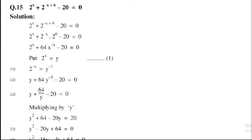Take y power minus 1 in denominator form, so power will be positive 1. So, y plus 64 divide y minus 20 is equal to 0. Multiplying y on both sides, y square plus 64 minus 20 y is equal to 0. So, y square minus 20 y plus 64 is equal to 0.